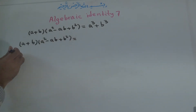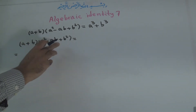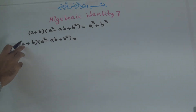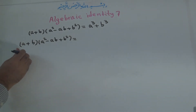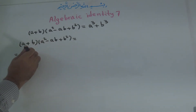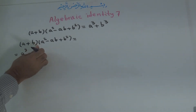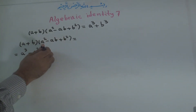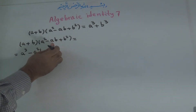First, we multiply the first term of the binomial with all of these terms, then the second term. A times A to the power of 2 becomes A to the power of 3. Positive times negative is negative: A times AB is A to the power of 2 B. Then positive times positive is positive: A times B to the power of 2 is AB to the power of 2.